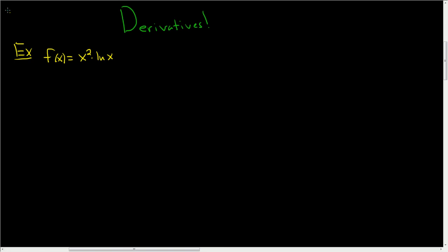In this video, we're just going to find derivatives. Before we do the first problem, let me write down the product rule on the side. The product rule says that if you have a product of two functions and you take the derivative, I think of this as the first piece and this as the second piece. So it's the derivative of the first times the second, plus the first times the derivative of the second.